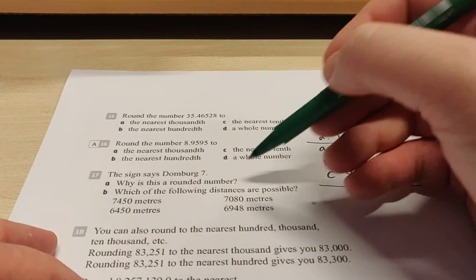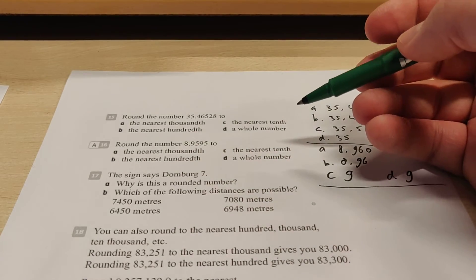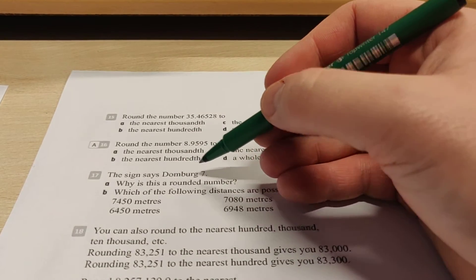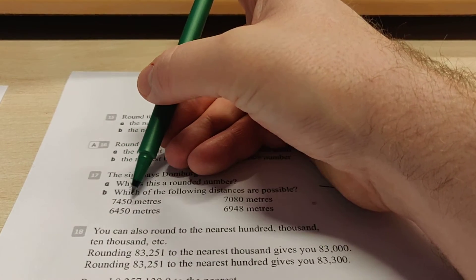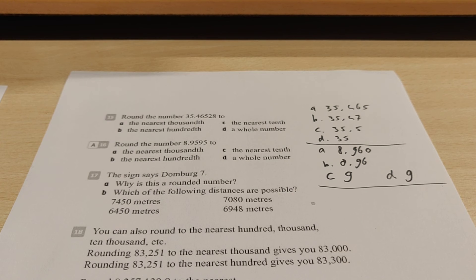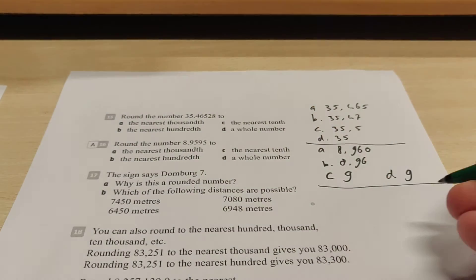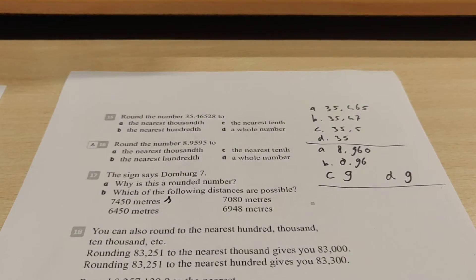Going to go to question B. It says, Which of the following distances are possible? So what could the real distance be? And then when you round it off, you still get 7. Here we see 7,450 meters. So we have to ask ourselves, is that closer to 7 kilometers or is that closer to 8 kilometers? Well, because there's a 4 here, it's closer to 7 kilometers. So this one is possible.